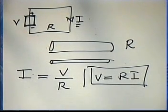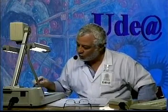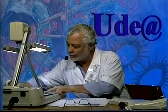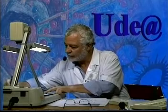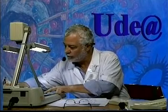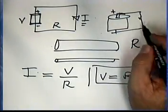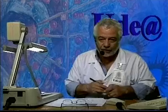Un cortocircuito se produce cuando la resistencia eléctrica tiende a cero. Por ejemplo, cuando uno los dos polos de una batería —el positivo y el negativo— con un conductor de muy baja resistencia, el conductor se calienta.